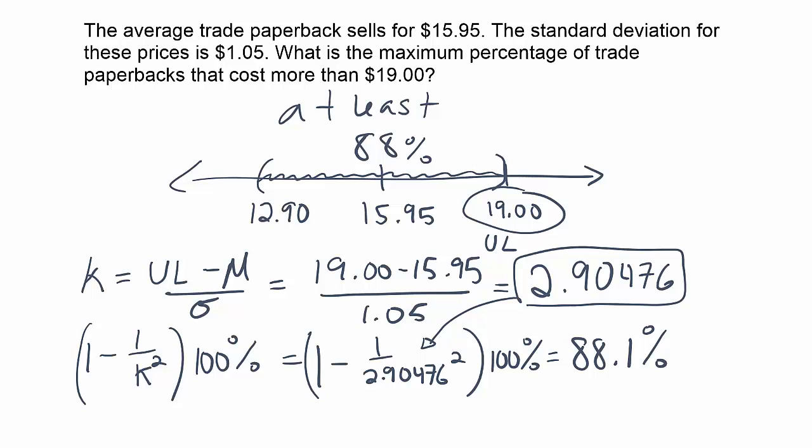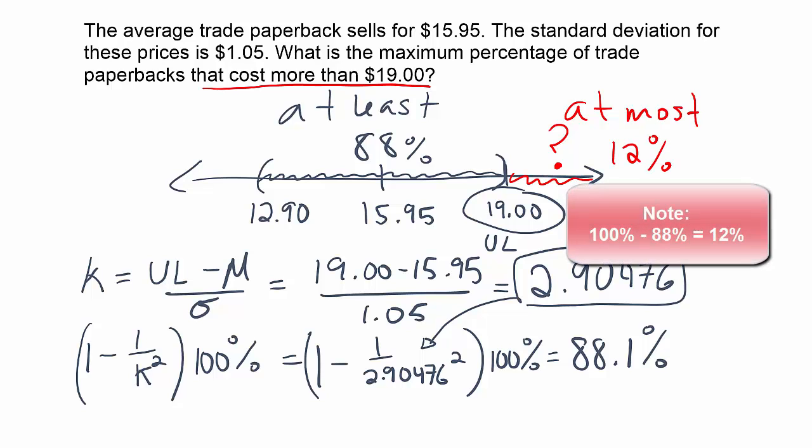Now, the question doesn't ask about inside that interval. It wants to know what percent cost more than $19. In other words, they're asking about this. They want to know what could this be. Well, what we know is that the interval we just created contains at least 88%. That means at most, outside of here, you couldn't have any more than 12%. And the reason why is because 88% is within the interval. So what could possibly be left outside of the interval? At most 12%. Why is it at most? Because at least 88% means it could be 88% or more. We could have 100% of books within that interval. So the maximum it could be outside is 12%.